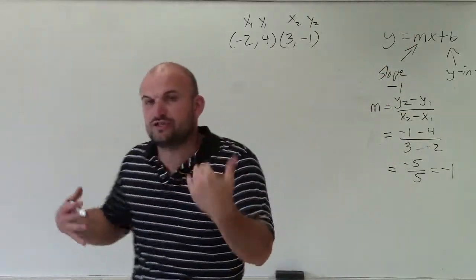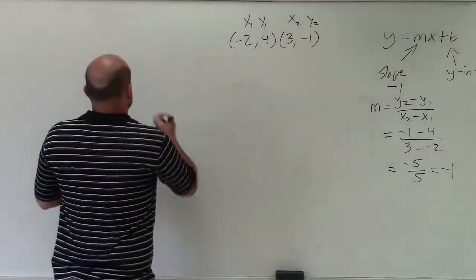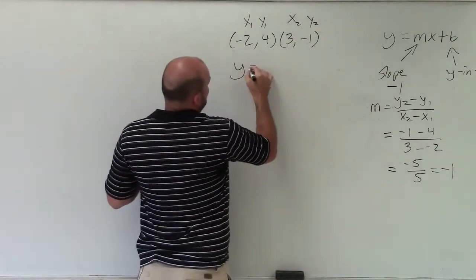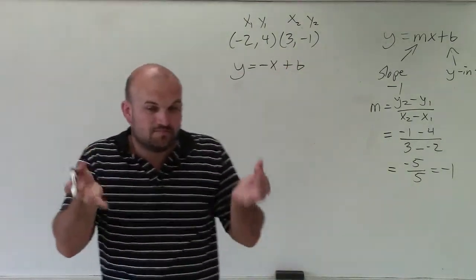So I'm going to plug in negative 1 for m. But now I need to determine b. To determine b, I'm actually going to use our slope-intercept form. Let's plug in what we know. We know y equals negative x plus b. The only thing we don't know now is b.